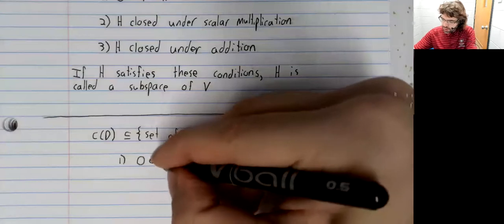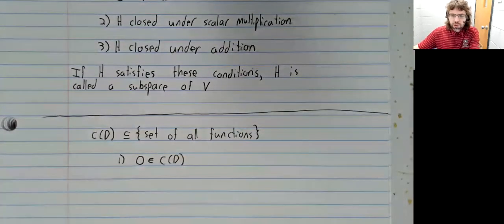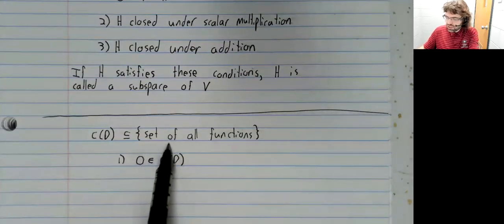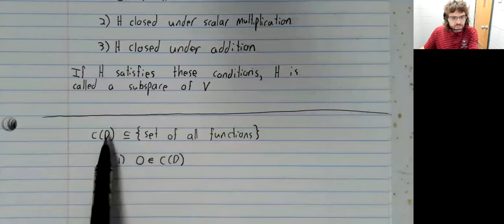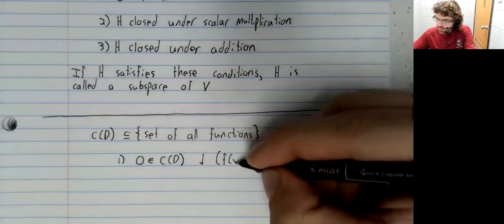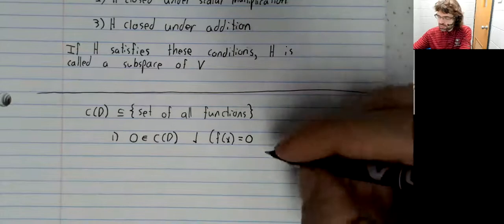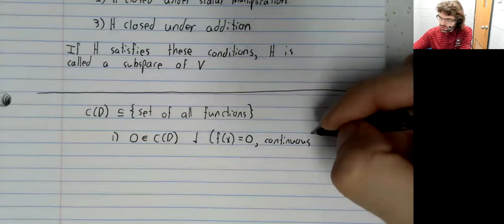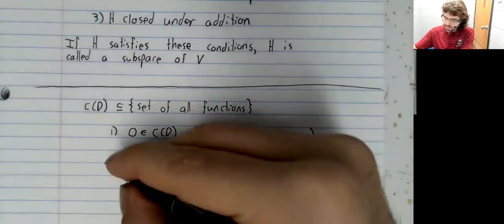Zero has to belong to this set. We know a zero function exists because this is a vector space. But we need that zero function to be in here. And that's a check. The zero function is the constant function f of x equals zero. And constant functions are continuous.